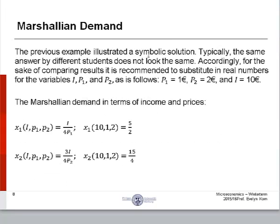So the previous example illustrated a symbolic solution. Typically, the same answer by different students does not look the same. Accordingly, for the sake of comparing results, it is recommended to substitute in real numbers for the variables i, p1, and p2. As is as follows: p1 equals 1 euro, p2 equals 2 euro, and i, income, equals 10 euro. Therefore, the Marshallian demand in terms of income and prices when you substitute in these real numbers will be x1 equaling 5/2, 5 halves, and x2 equaling 15/4.